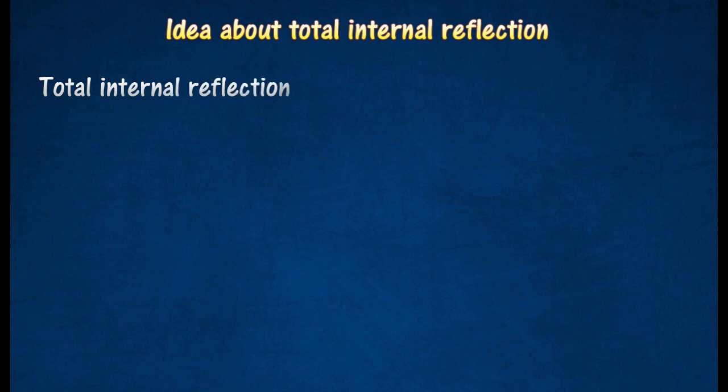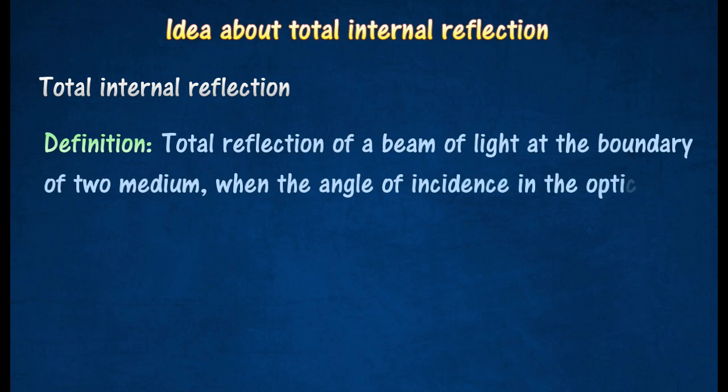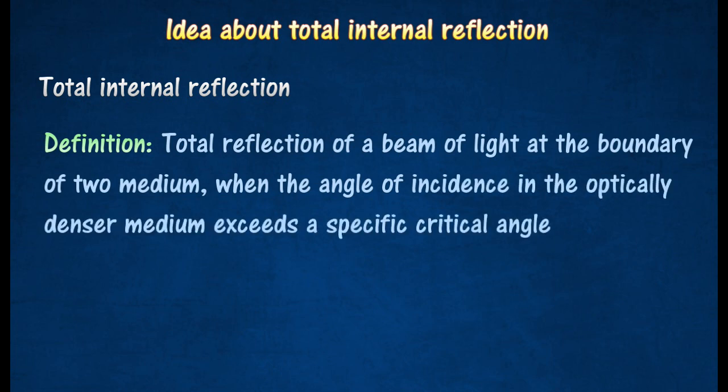Total internal reflection is the total reflection of a beam of light at the boundary of two medium, when the angle of incidence in the optically denser medium exceeds a specific critical angle.